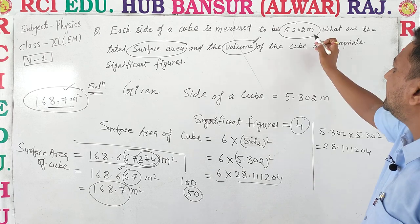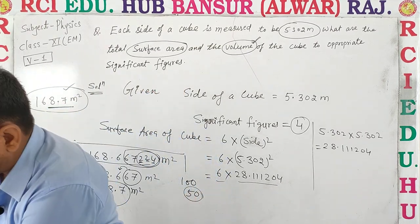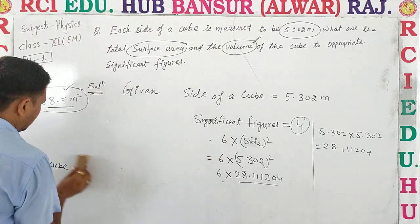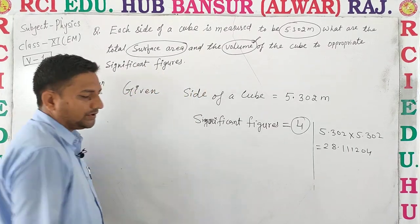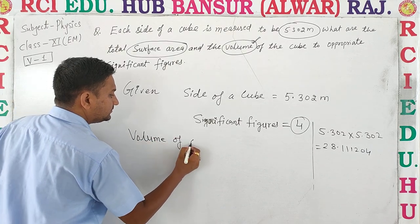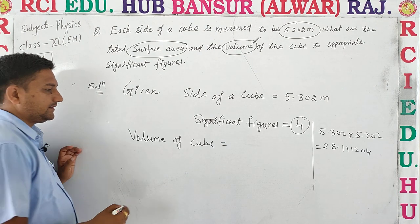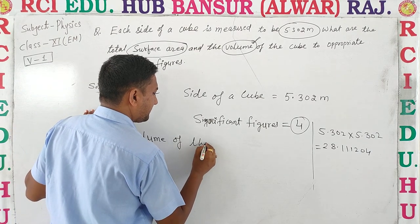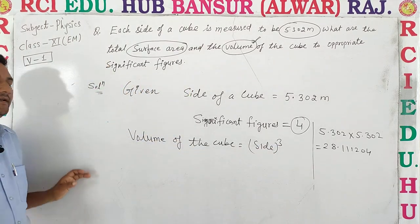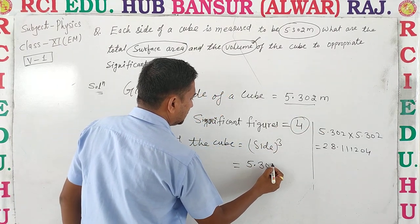Volume calculate करते हैं। Given value में significant figures कितने हैं यह देखेंगे। Volume of cube का formula है: side³. Side आपके पास given है 5.302, तो volume = (5.302)³.